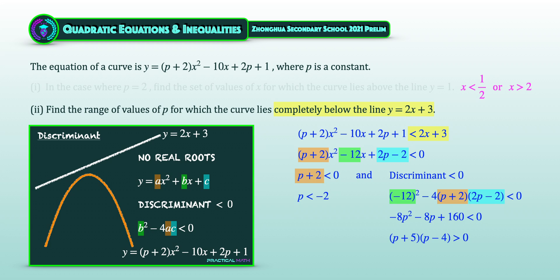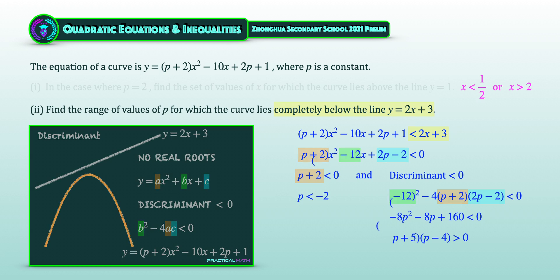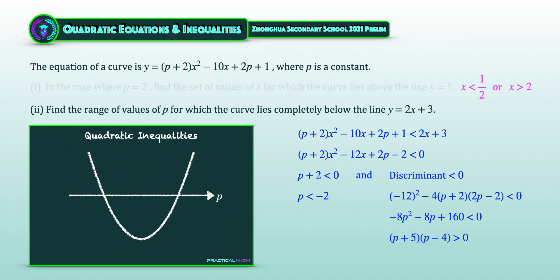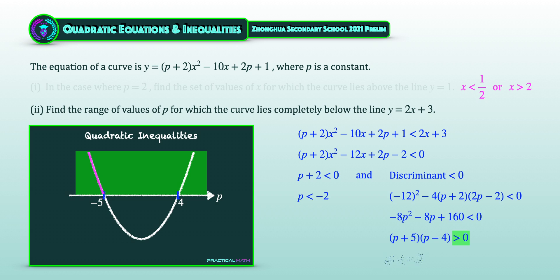You are also reminded to flip the less-than symbol to a greater-than symbol, since we are multiplying by −1 throughout. To solve this quadratic inequality, we illustrate it with a sketch and write in the horizontal intercepts of −5 and 4. The part where p² + p − 20 > 0 refers to the region above the horizontal axis, giving two ranges: p < −5 or p > 4.